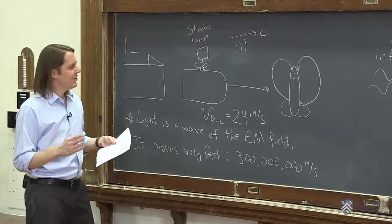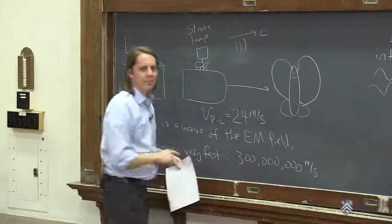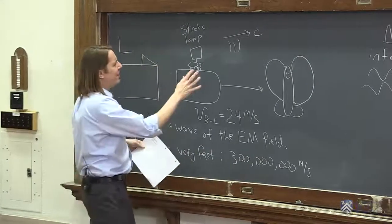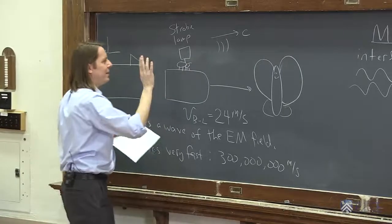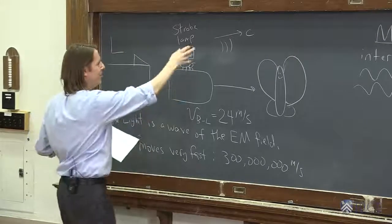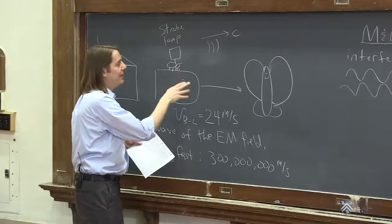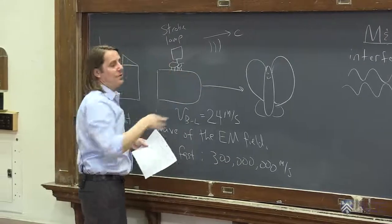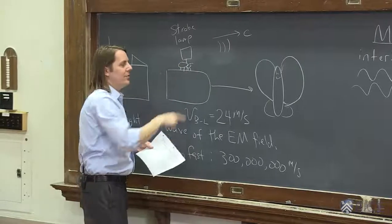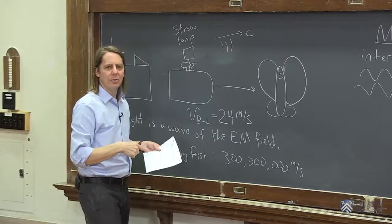Maybe it's actually the case that light goes this fast in any frame. So maybe it's the case that if we're standing here in the lab frame, and we see the light come out of the strobe lamp, we say it went at 300 million meters per second. And if you're the ant on the bullet, and he watches the light move forward, he also says it went 300 million meters per second.